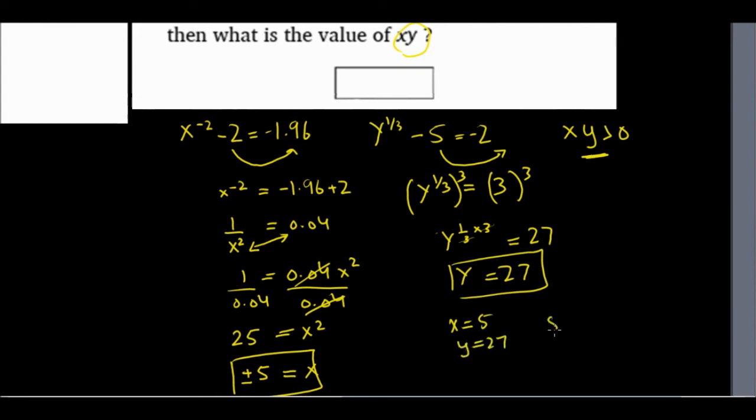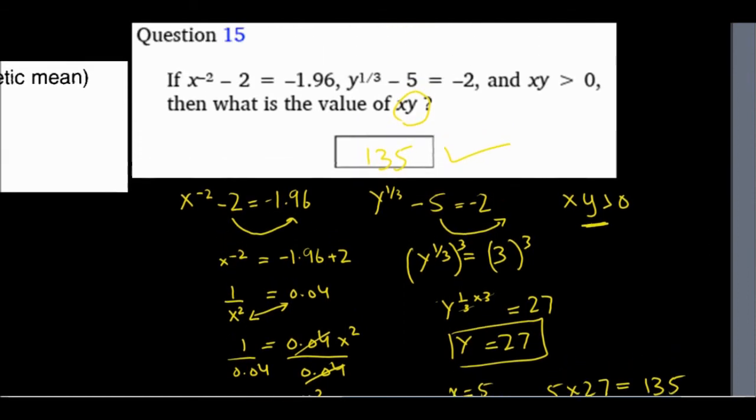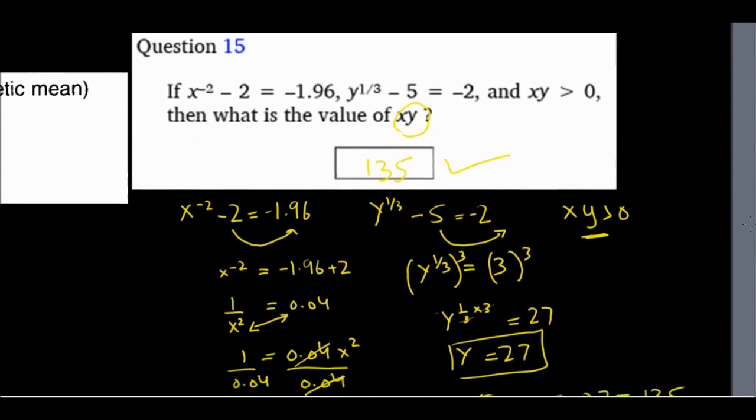So the value that I'm looking for is x equals 5, y equals 27. And this product 5 times 27 is 135, which is the answer. So pretty ugly looking equations, a lot of math in here, but in the end, it comes out to be not that hard.